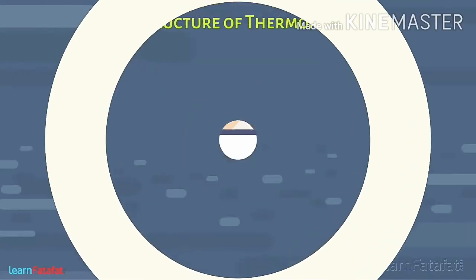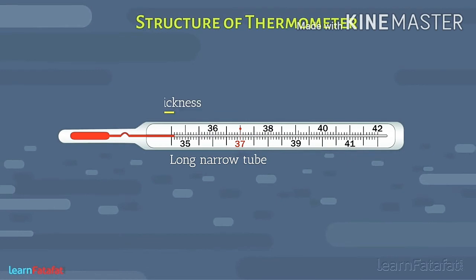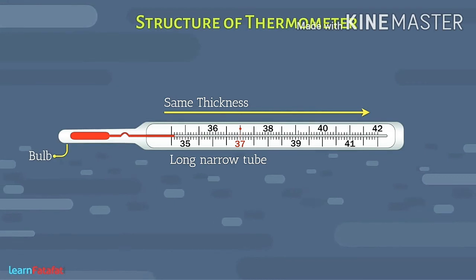Now we will study the structure of a thermometer. A thermometer is a tube which keeps the same thickness. Its pointed part is called the bulb, which contains liquid mercury.